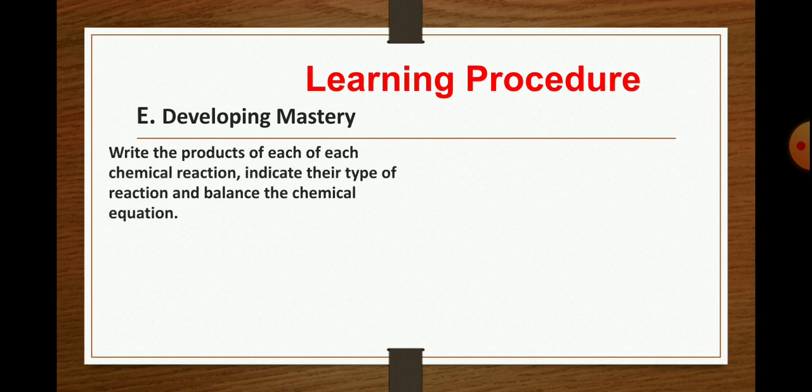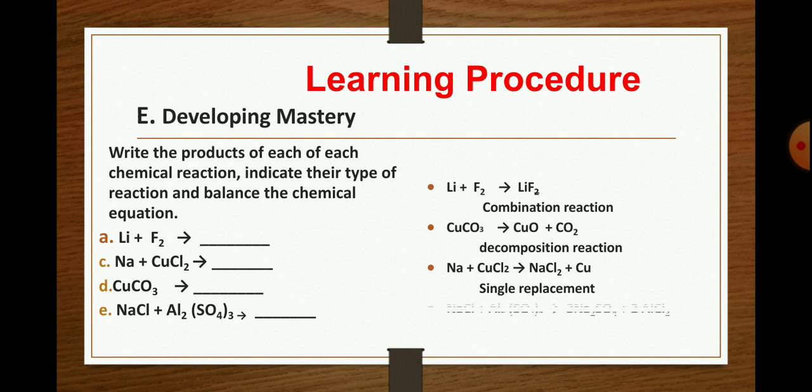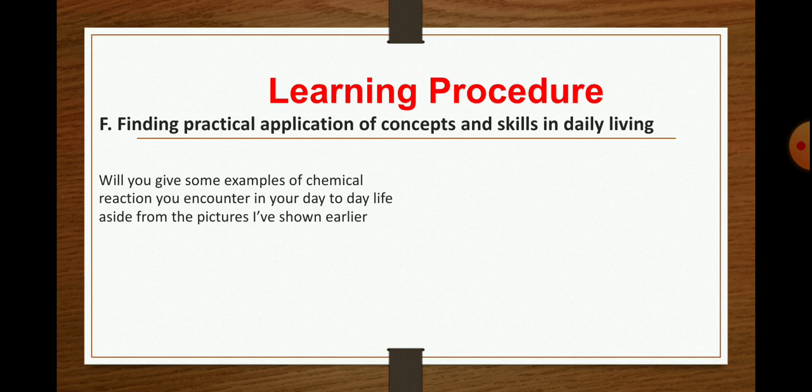To develop your mastery, you may write the products of each chemical reaction, indicate their type of reactions and balance the chemical equation, lithium chloride. Those are the examples. The answer for letter A is the combination reaction. For letter C, copper carbonate, copper carbonate, yes, and that is the decomposition reaction from copper oxide and the carbon dioxide. We have sodium plus copper chloride for letter C and that is single replacement. And letter E, double displacement. So those are the four types of chemical reactions.